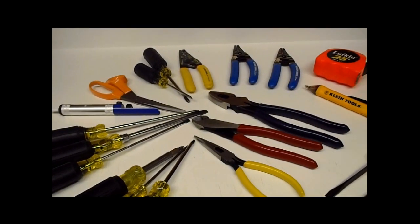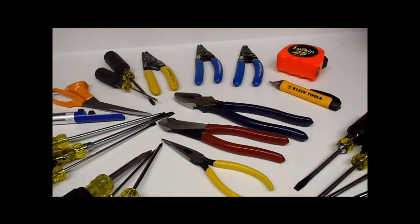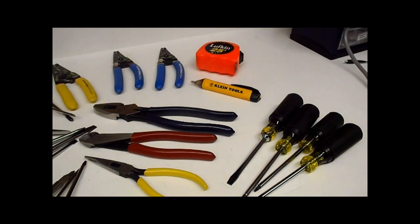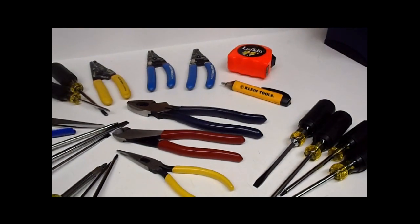And then just the solder sucker, scissors, your staple pliers which is your needle nose, your side cutters and your linesman. And then a non-contact voltage detector, tape measure and wire strippers.